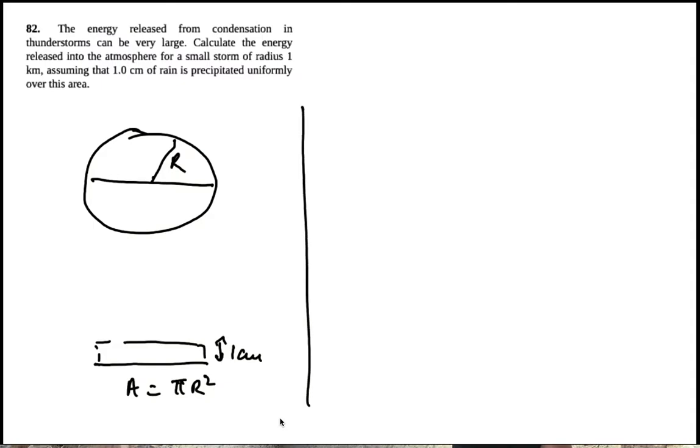So the volume of water that fell is pi r squared times thickness, which is pi times the radius of the cloud is 1 kilometer, so 10 to the 3 meters squared. And the thickness, or the amount of rain that fell, was 1 centimeter, which is 10 to the minus 2 meters.